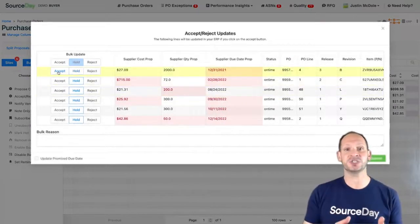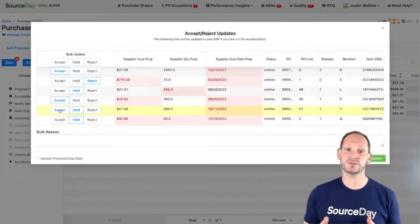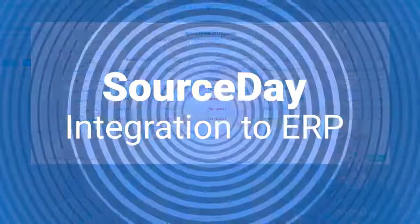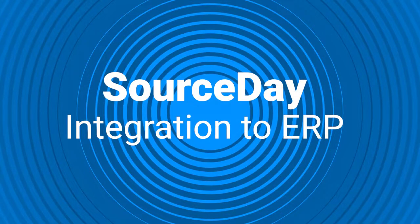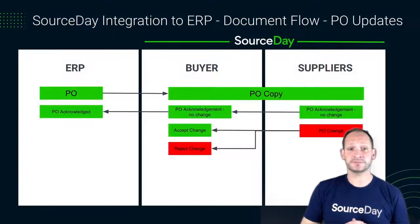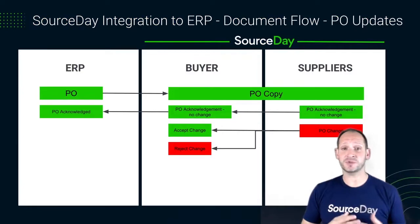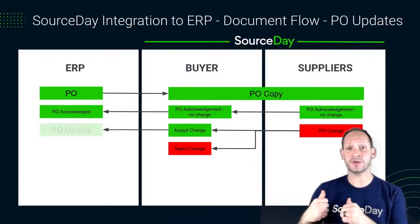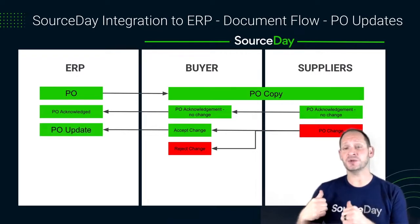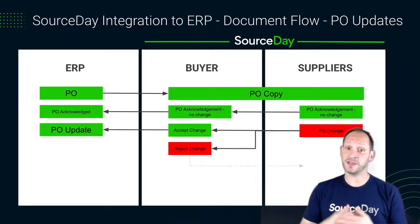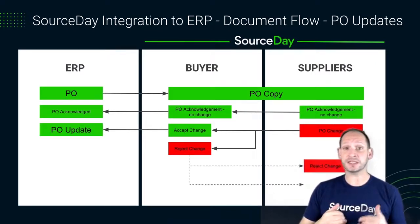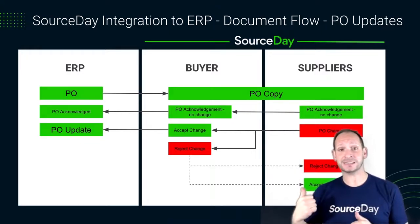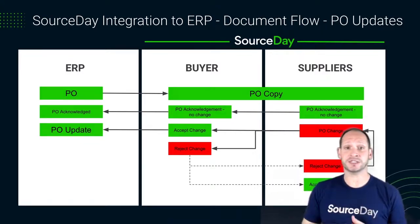We can either accept these changes, reject them, or put them on hold if we need to talk more to production or customer service about the impact to customer orders or production planning. If a buyer or planner accepts those PO lines, SourceDay is automatically going to send the signal back to ERP and update those PO details inside of ERP. If they're rejected, a notice is immediately sent back to the supplier where additional collaboration is going to have to happen.